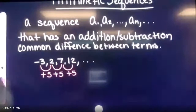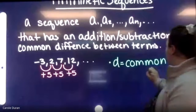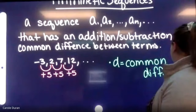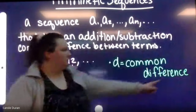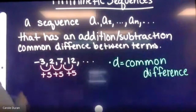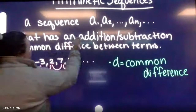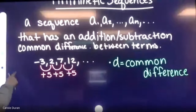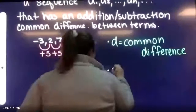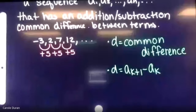To find our common difference d, we use the formula a(k+1) minus a(k), and we should test it on a couple different sets of terms.